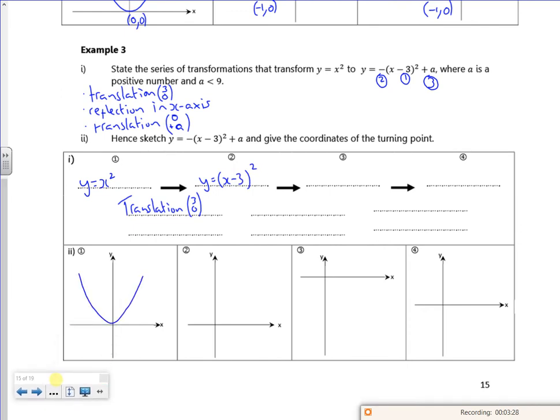So I've got x squared with 0, 0. x minus 3 squared is going to be at 3, 0. So if you think with that one, if x is 0, it's minus 3 squared. So that gives me a crossing point 9.